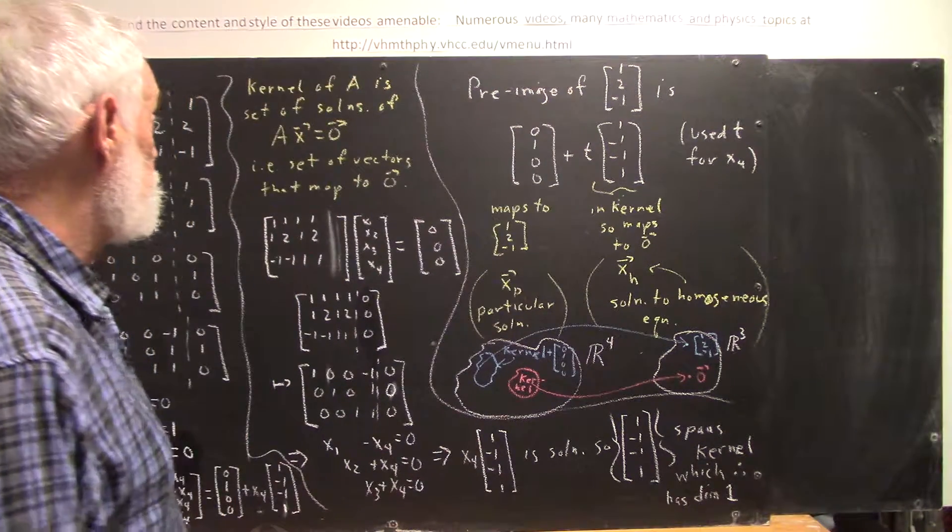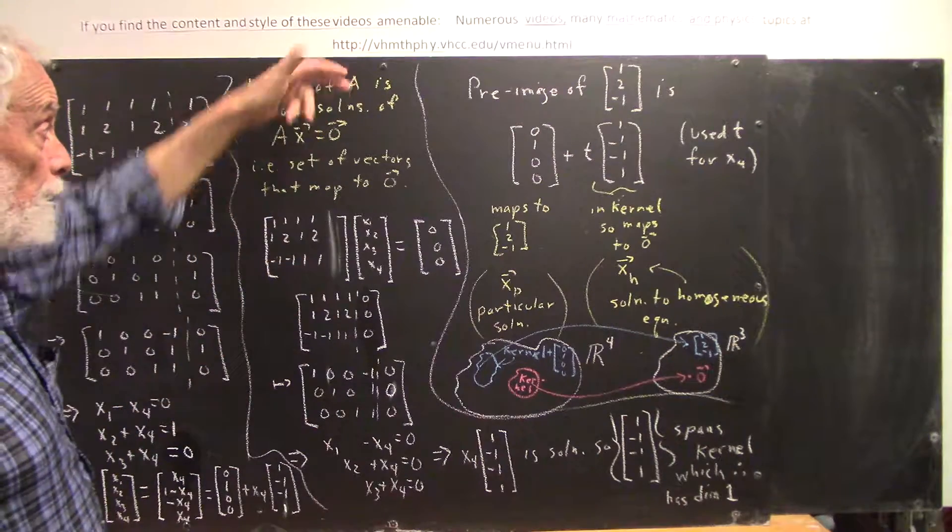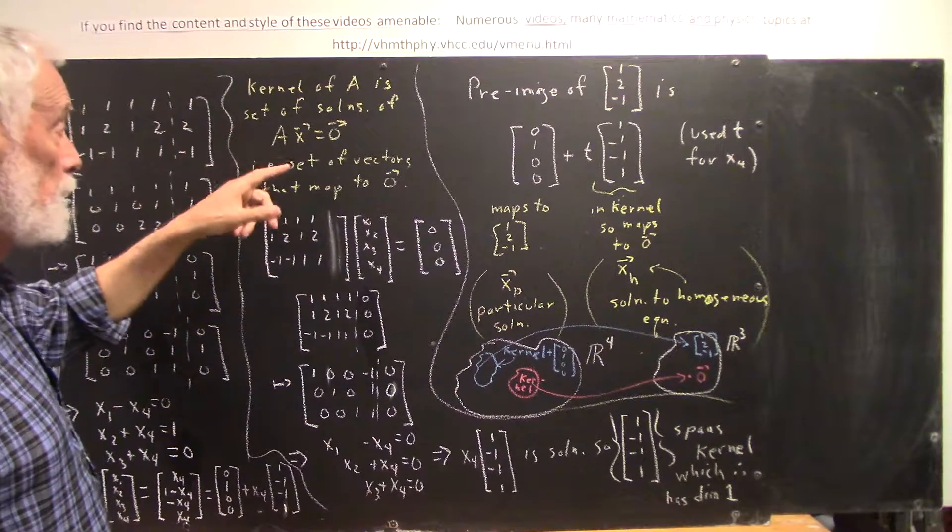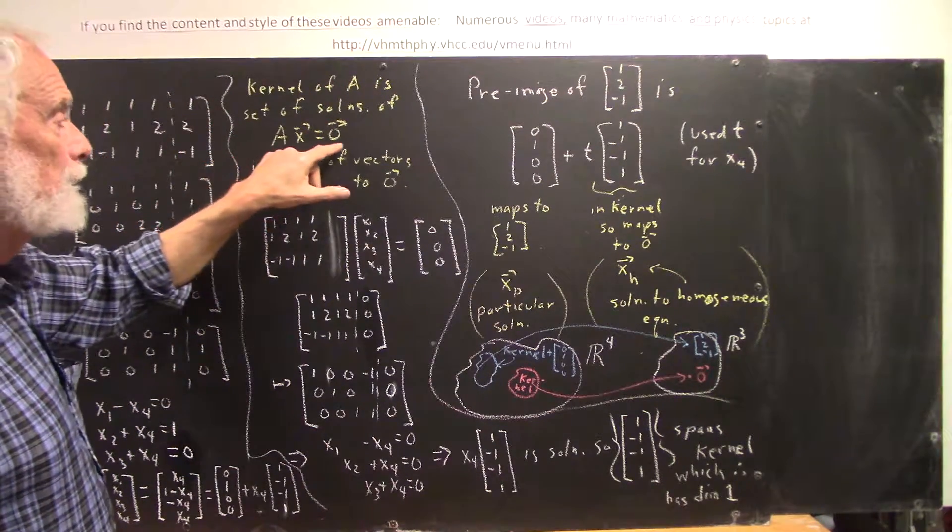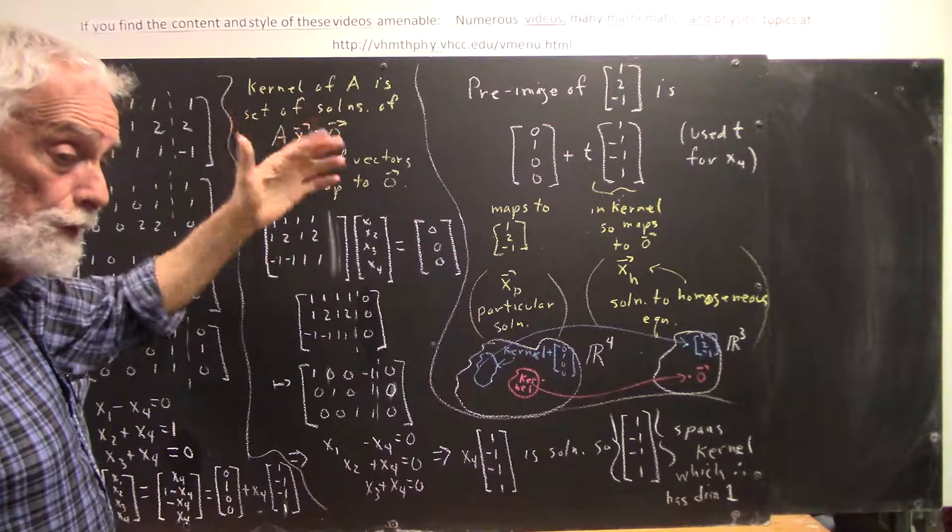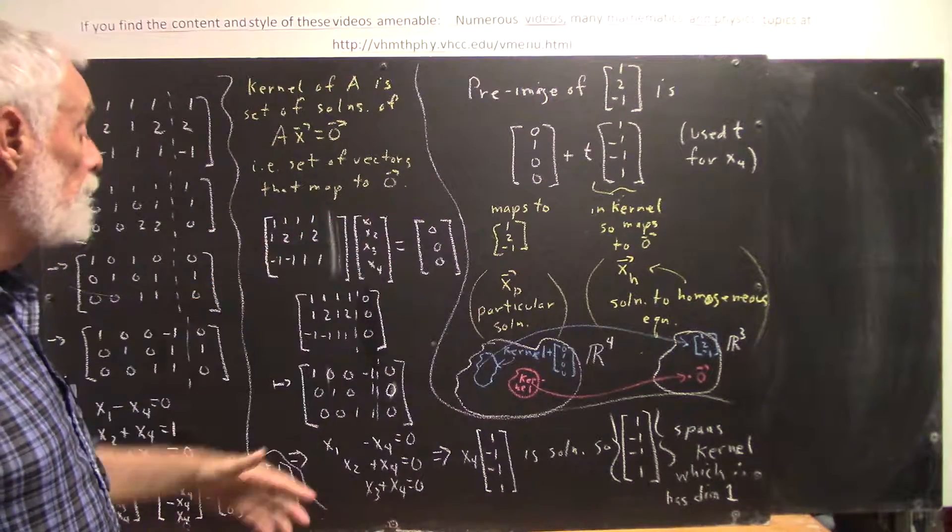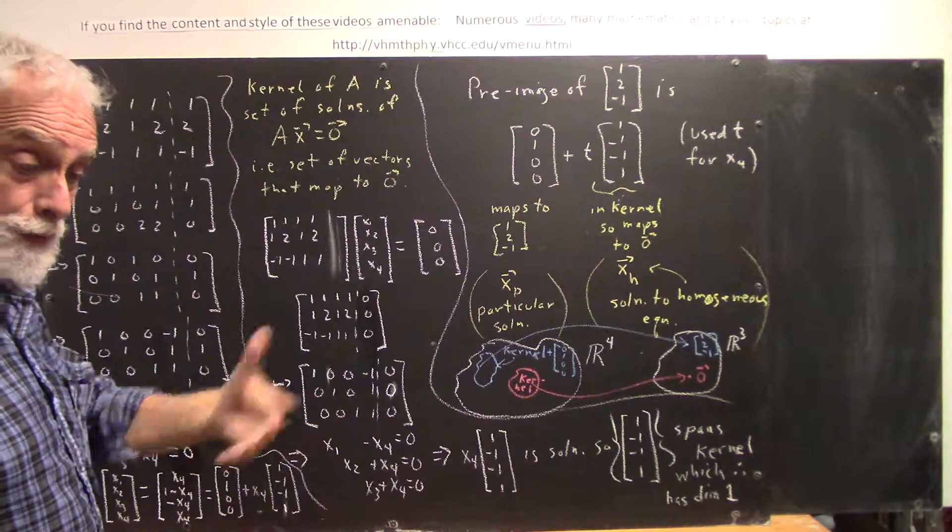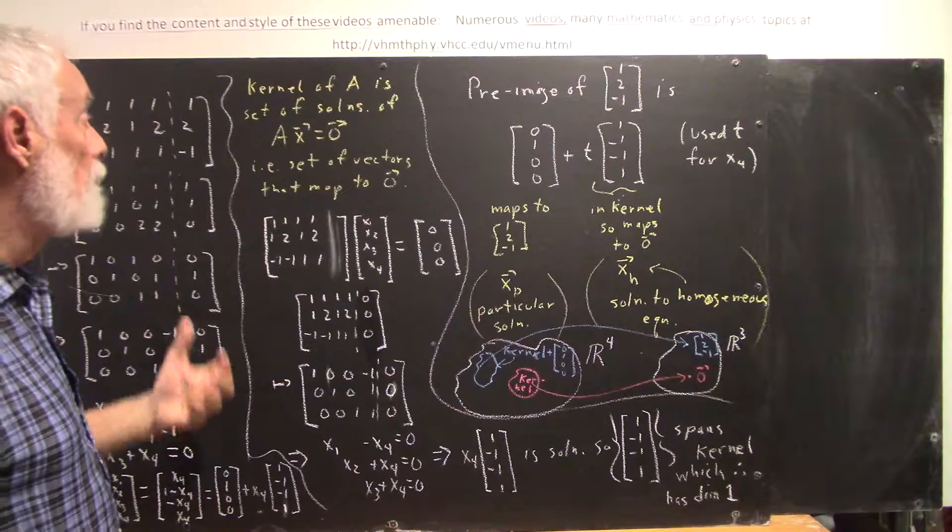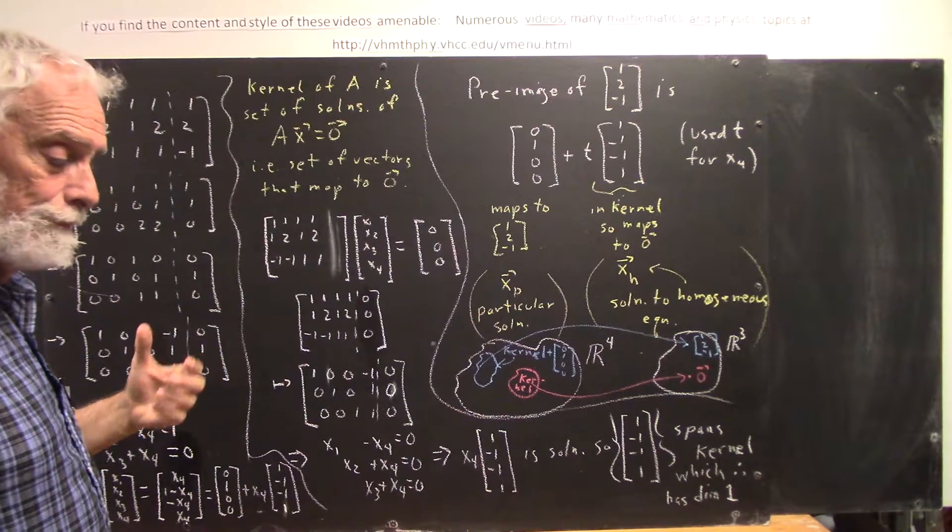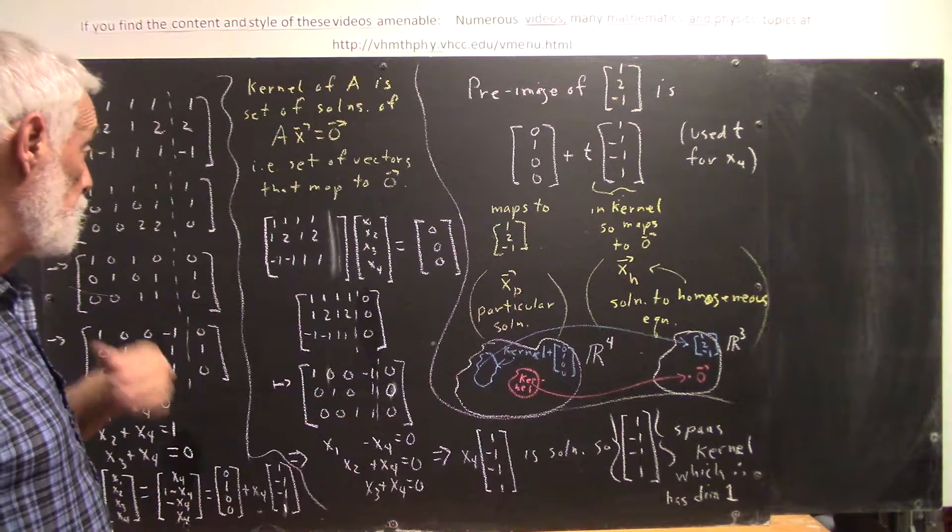The kernel of a matrix of a transformation, the kernel of the transformation defined by the matrix, is a set of solutions of AX equals 0, where X and the 0 are vectors. This is a set of vectors that map to 0. That's the null space, just another way of saying it. It's the kernel of the transformation. It can be identified with the null space.